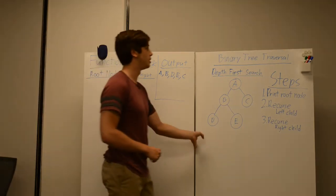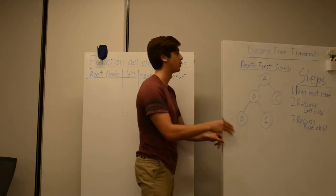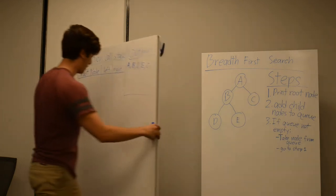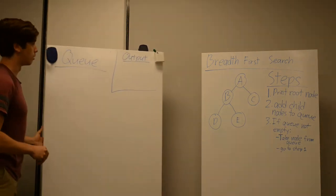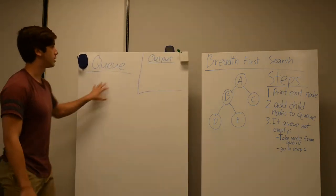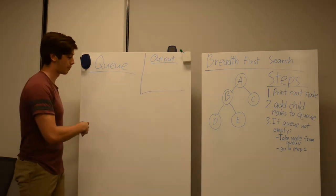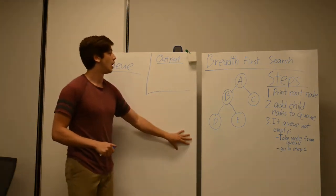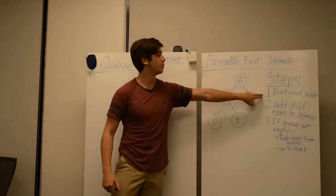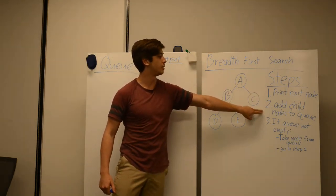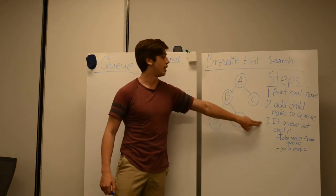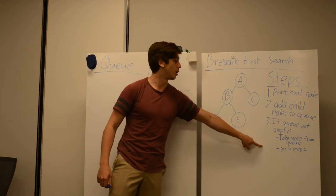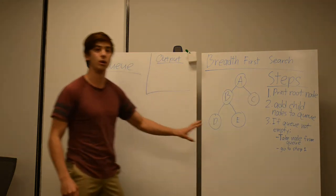Moving on to breadth first search. The steps for breadth first search are: we're going to print the root node, we're going to add the child nodes to the queue, and then if the queue is not empty, we are going to take a node from the queue and go back to step one with that new node.